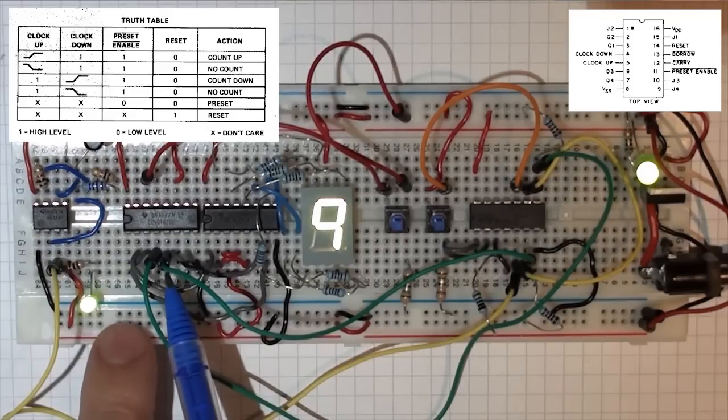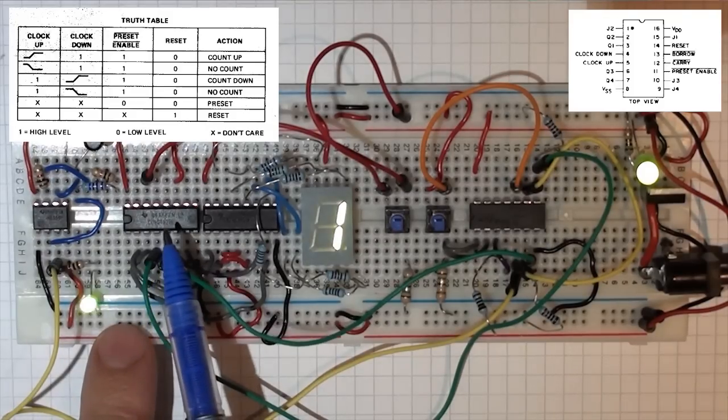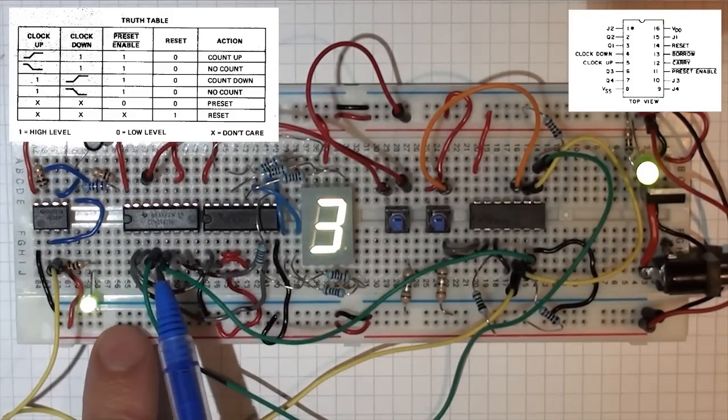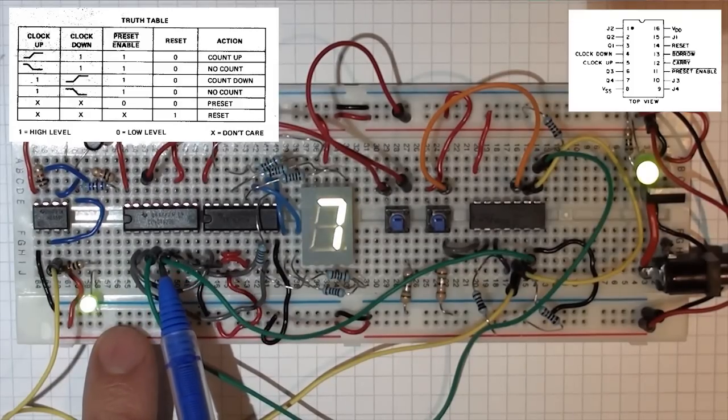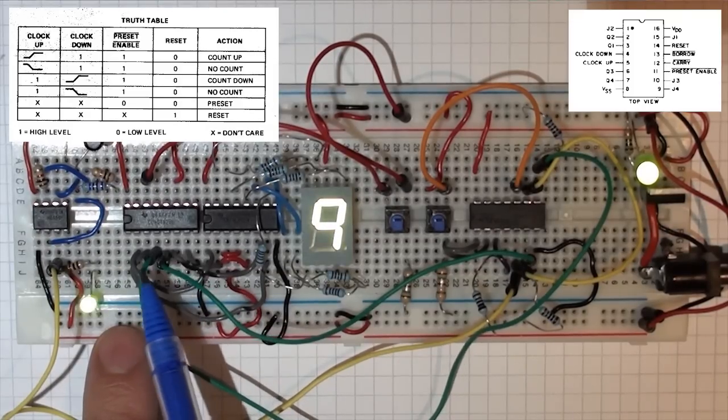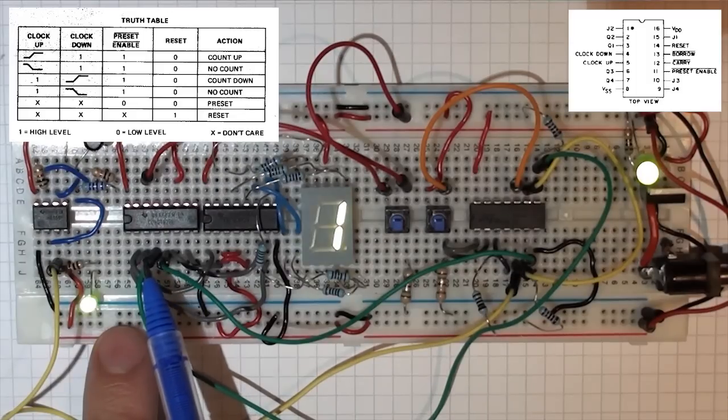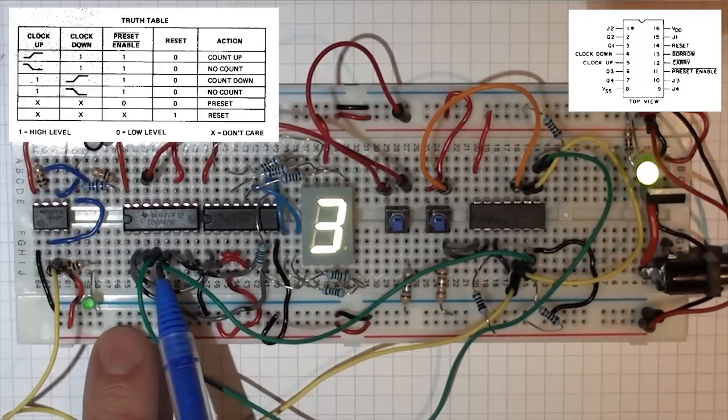These two green lines are both clock lines going back to the up-down counter. And to count up, you have to have this pin with the clock and this pin high. And when you want to have the countdown, you have to have this pin with the clock and this pin high.